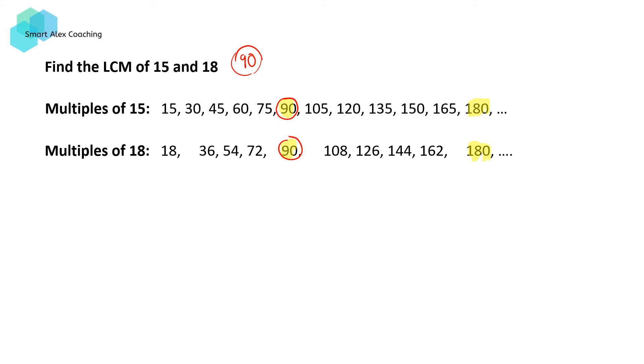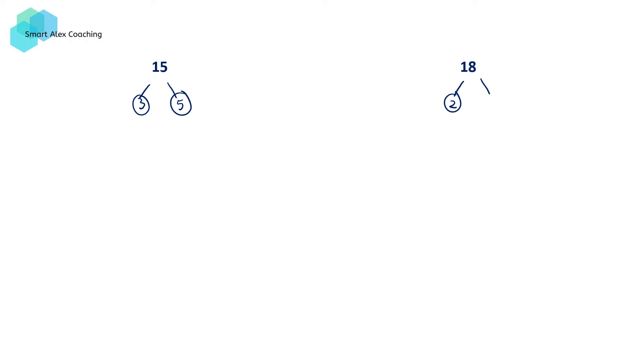This method can get quite tedious and inefficient as the numbers get larger, and this is where prime factorization comes in. Prime factorization allows us a way to find the LCM of a set of numbers more efficiently. Let's look at how to find the LCM of 15 and 18 using its prime factorization. We begin by factorizing 15 and 18 using a factor tree. So 15 can be broken down into 3 times 5, and 18 can be broken down into 2 times 9, and 9 can be broken down further into 3 times 3. So 15 is equal to 3 times 5, and 18 is equal to 2 times 3 times 3.